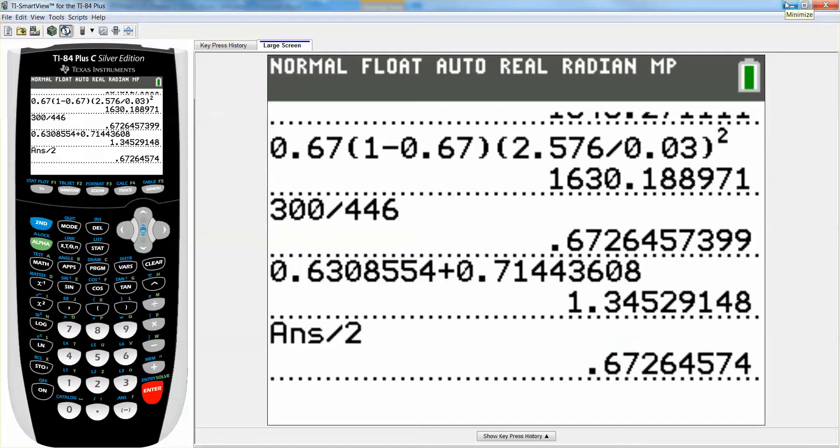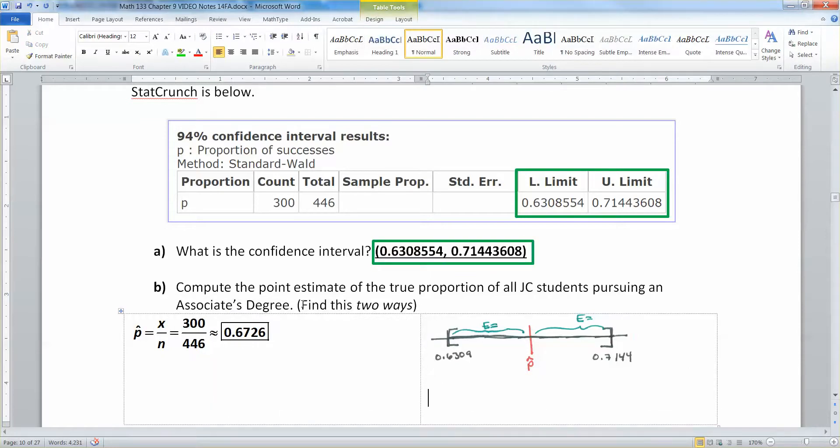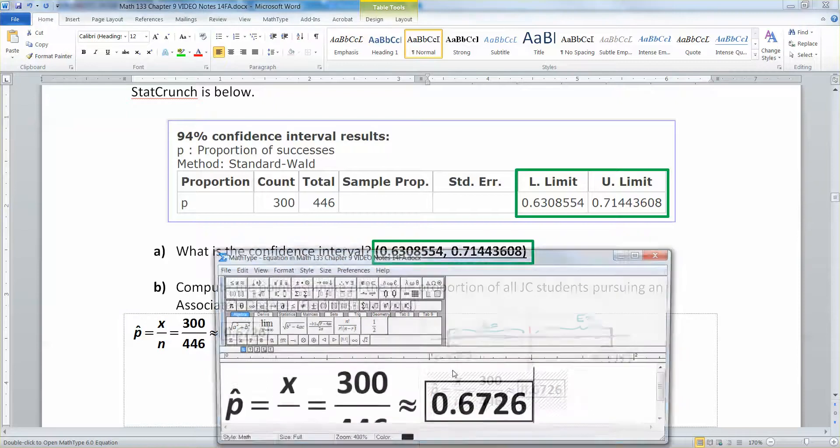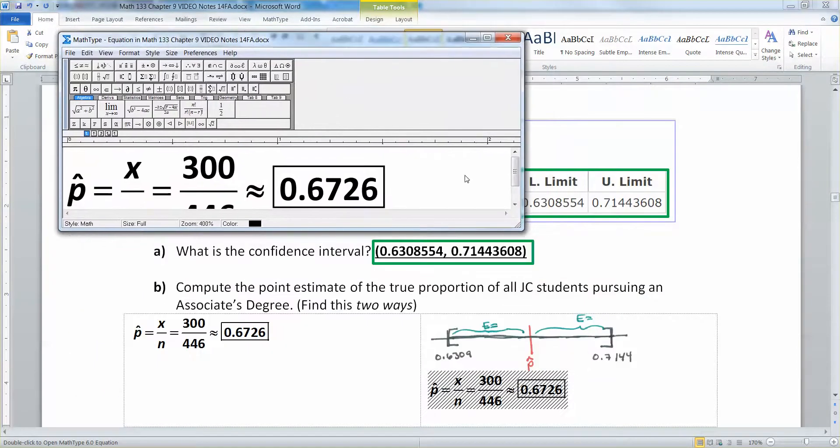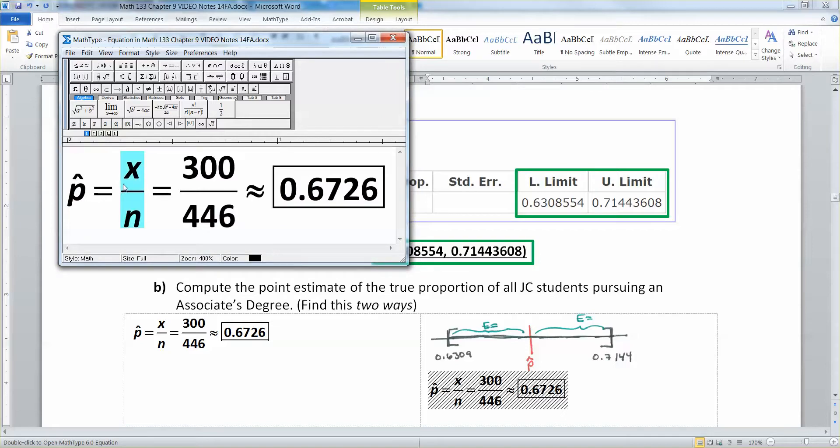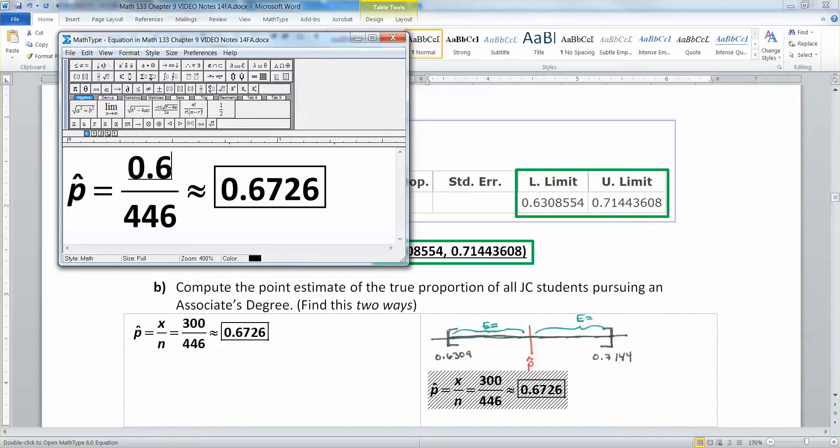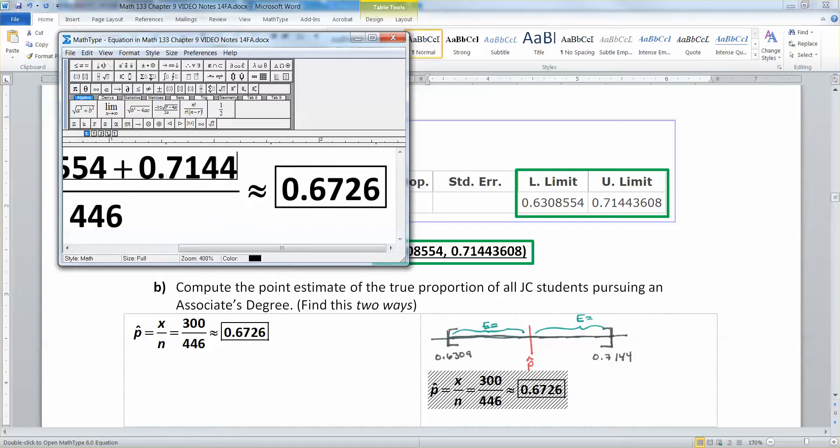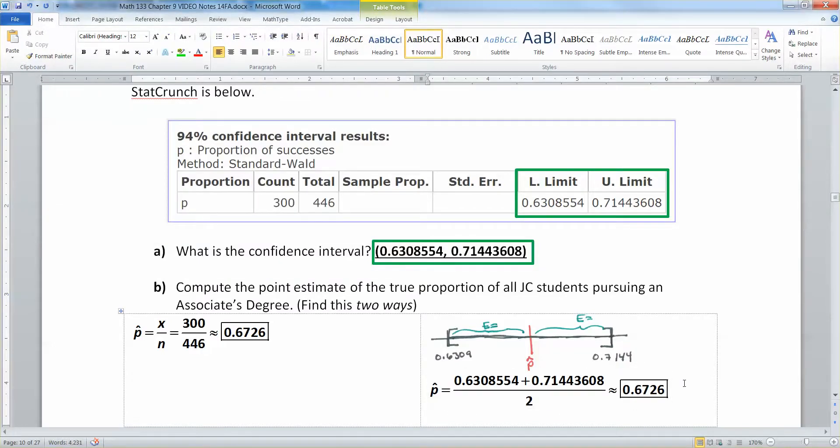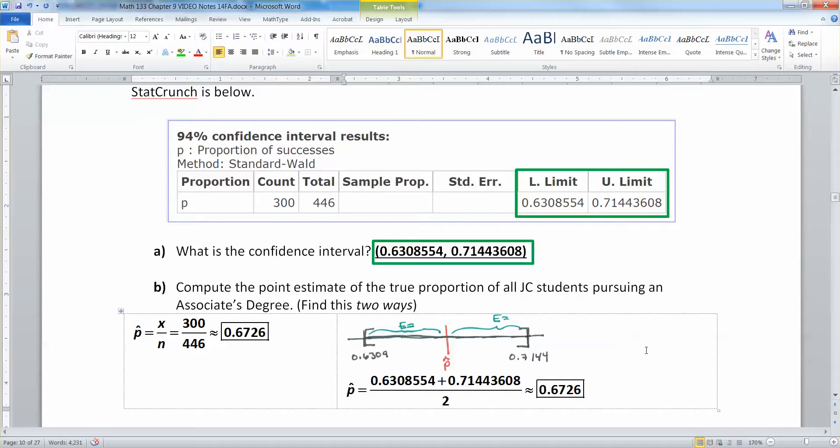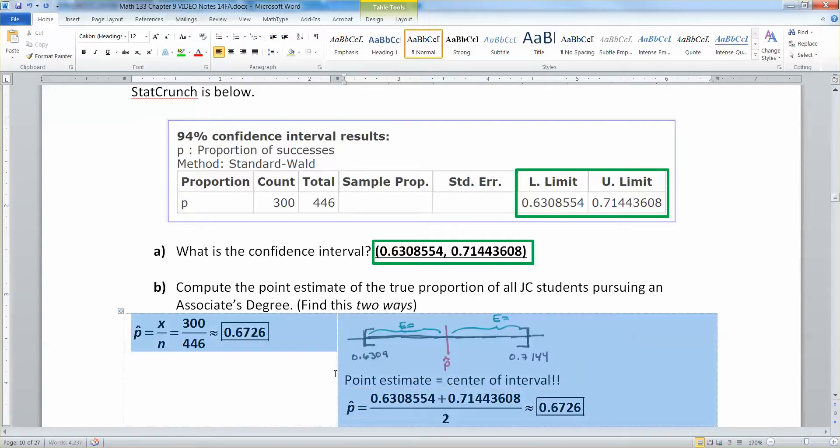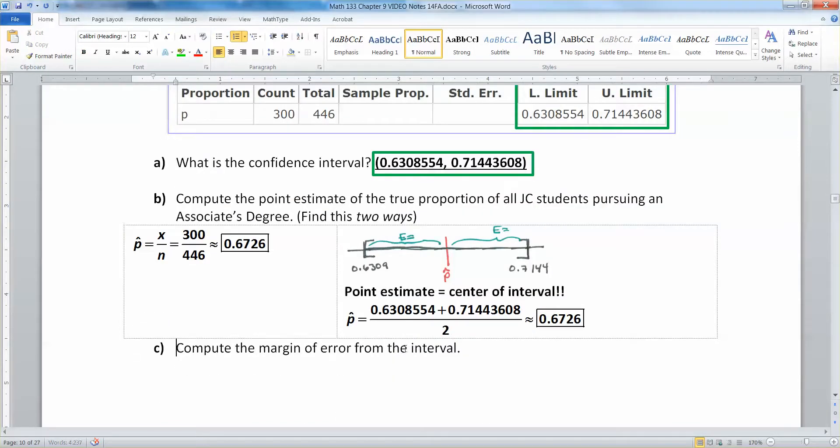So p-hat is equal to the low value plus the high value divided by 2. I take my lower, 0.6308554 plus 0.71443608, add them up, divide by 2, and I have the middle, which is 0.6726. I'm not using the formula per se. I'm using the idea that the point estimate is the center. Point estimate is the middle of the interval. I add up, divide by 2, and I've got my center.